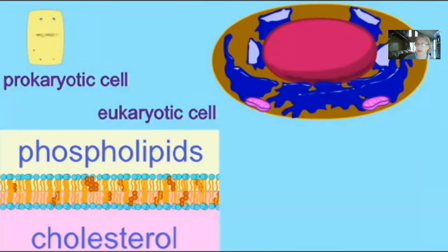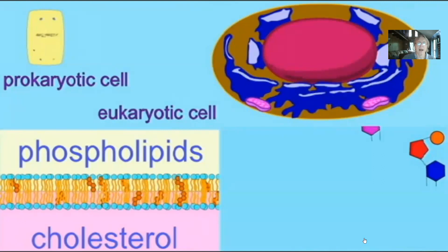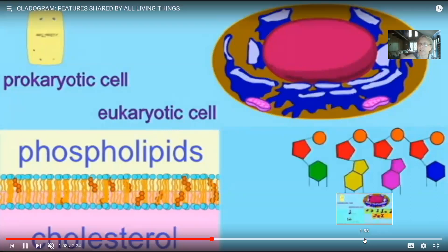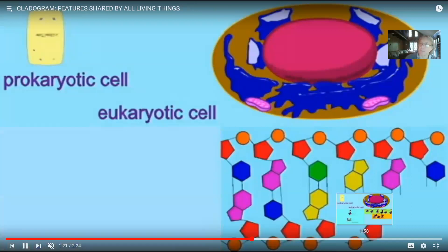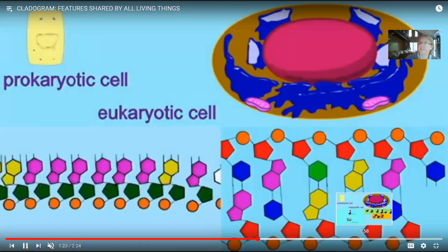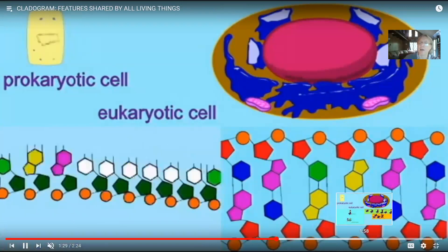We use globins to carry oxygen in our red blood cells - it was prokaryotic cells which invented globins. So even if you were to say you're not interested in bacteria, you're interested in humans - the human complexity was built on a foundation. Long before there were humans, there were bacteria which were experimenting, mutating, inventing new biochemical pathways for a billion and a half years - a third of the history of life.